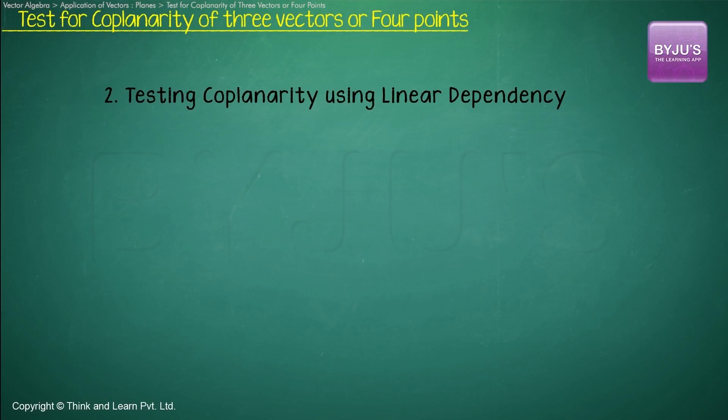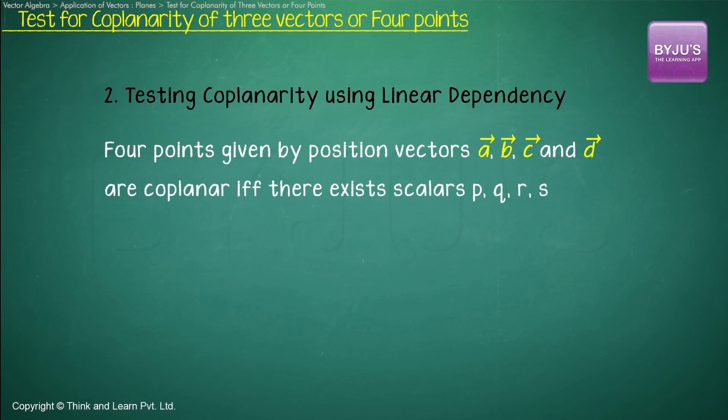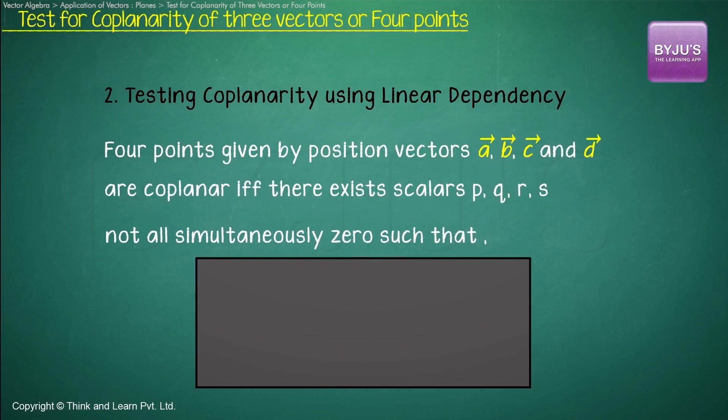So let's look at method number two, that is by using the linear dependency of vectors. The theorem states that four points will be coplanar if and only if there exist scalars P, Q, R and S not all simultaneously zero such that P·vector A + Q·vector B + R·vector C + S·vector D = 0 and P + Q + R + S = 0.